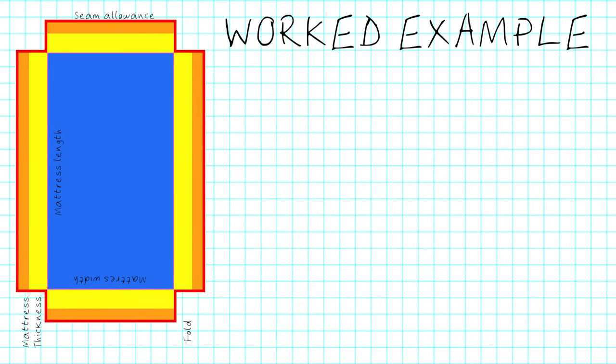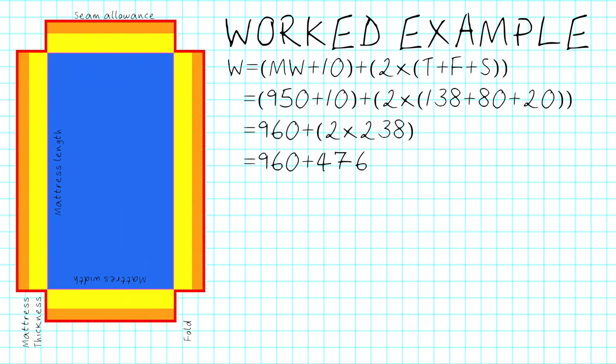Here's the equation to find the width of the sheet. You need to take the mattress width plus 10 millimeters and add on two times the thickness folds and seam allowance. So that's 960 plus 476 which comes to a total of 1436 millimeters.